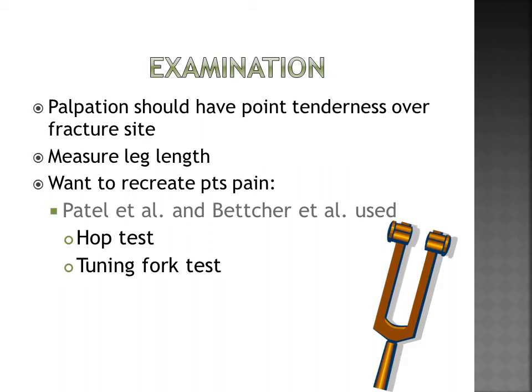Patel et al. and Betcher et al. used the hop test and tuning fork to recreate the patient's pain. With the hop test, they found that 70 to 100% of people with stress fractures had a positive test, but also 50% of people with shin splints had a positive test, so you want to be careful. For the tuning fork, a small study found a sensitivity of 75% and specificity of 67%, but more research is needed.